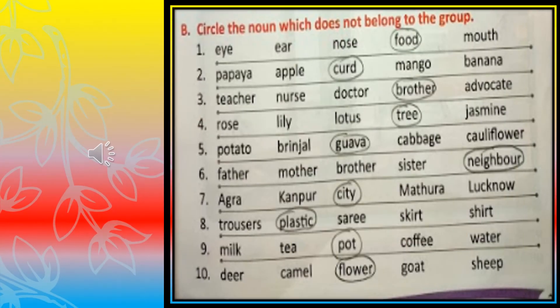Here, we have to circle the noun which does not belong to the group — this is the odd one out. For example: eye, ear, nose and mouth are parts of our body, but food is not a part of our body. So food is the odd one here, and we will circle it.